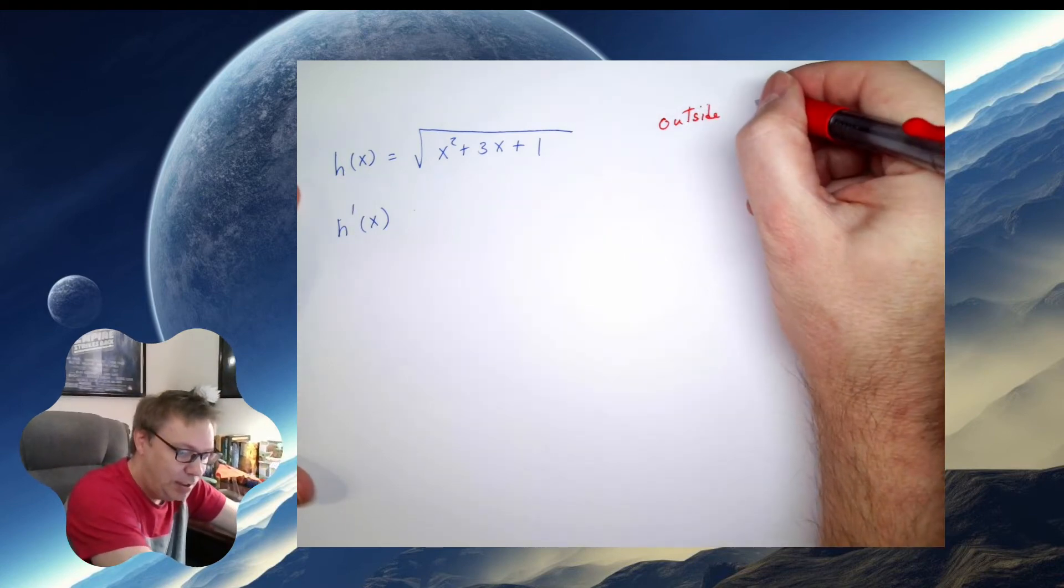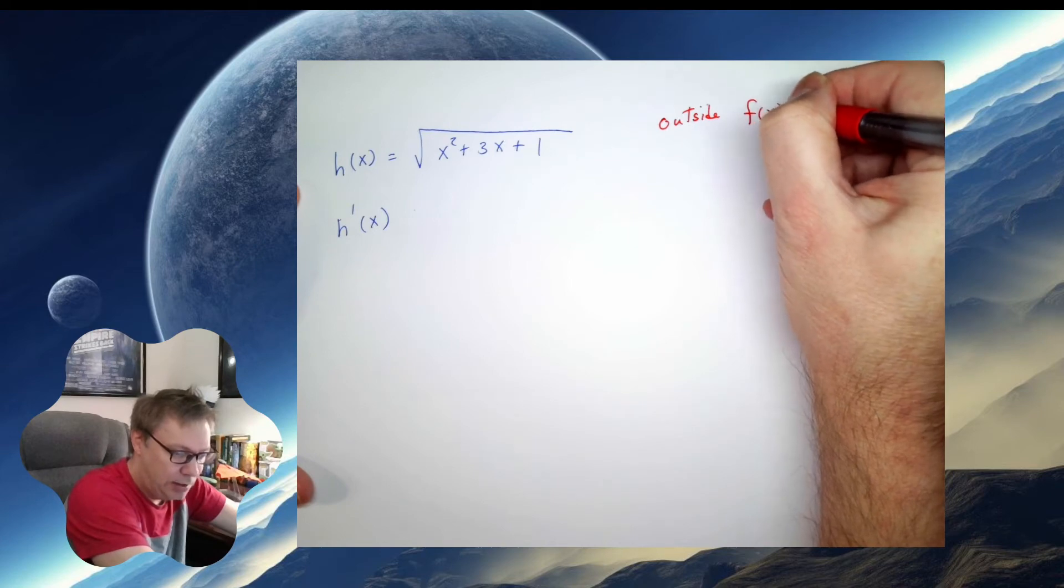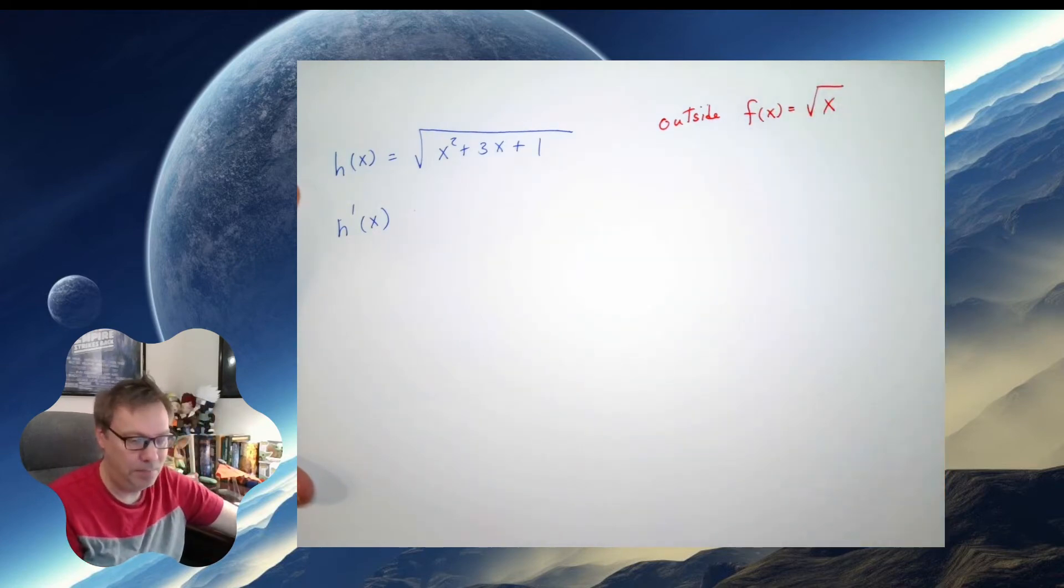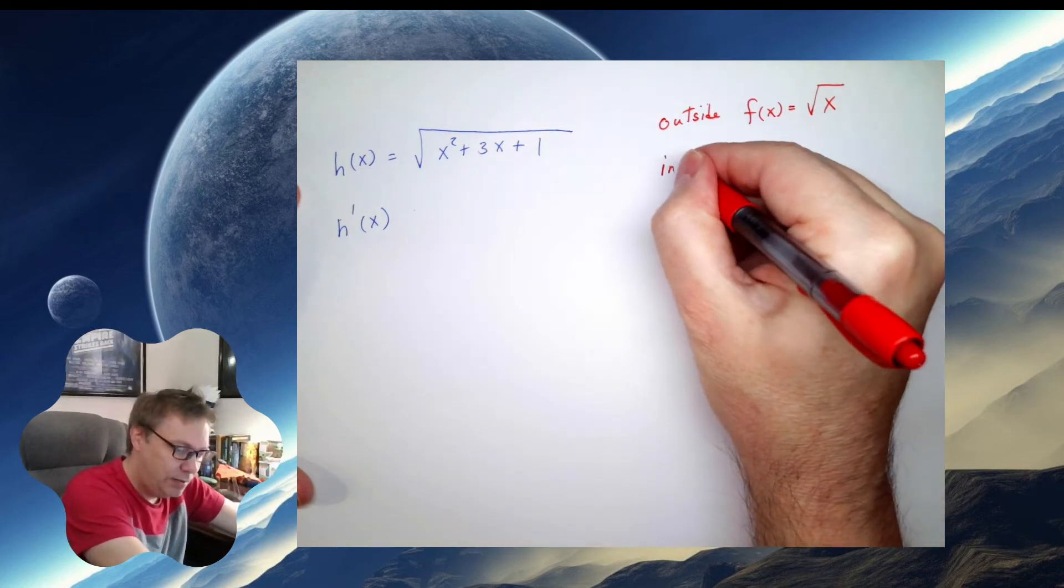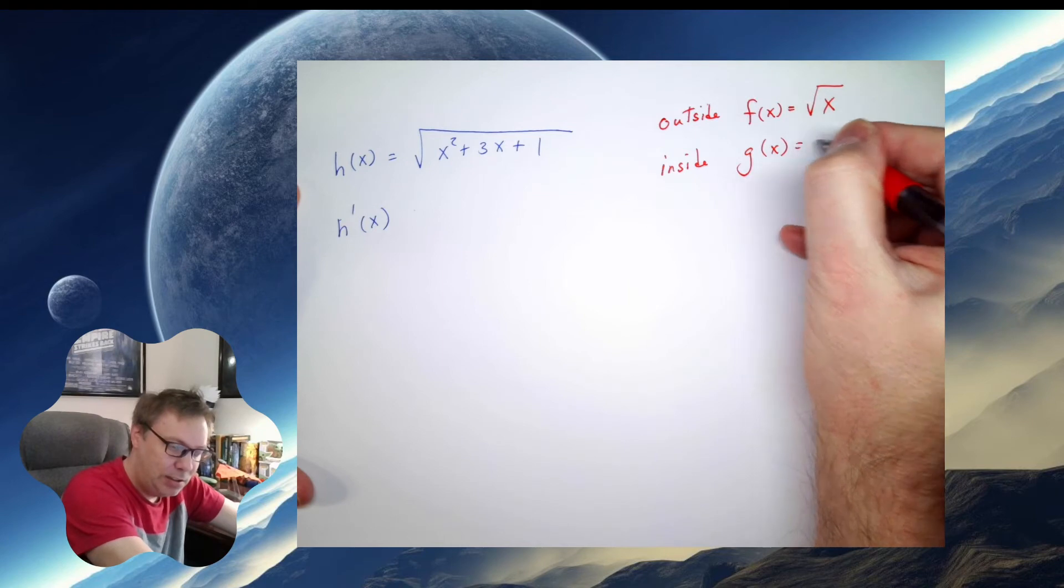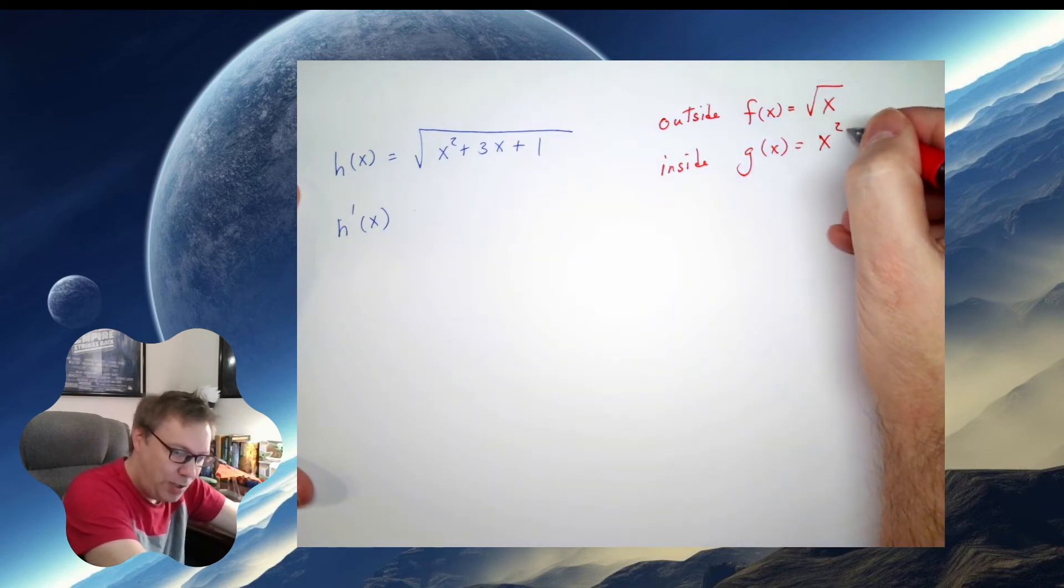The outside, which I normally call f of x, this is the square root of something. And the inside, which I normally call g of x, this is x squared plus 3x plus 1.